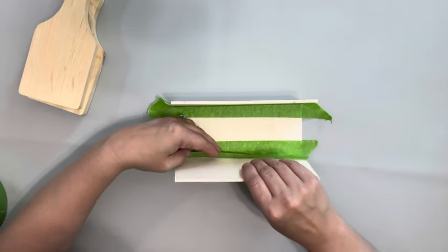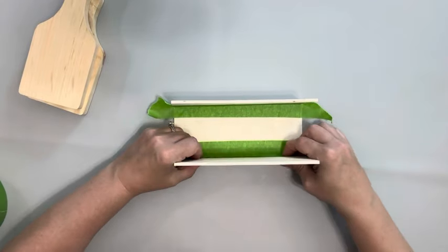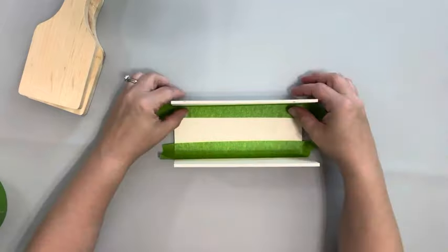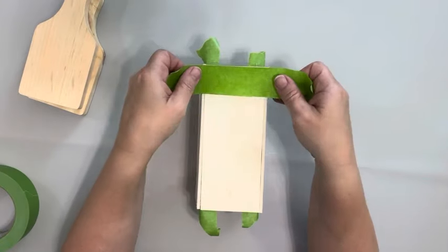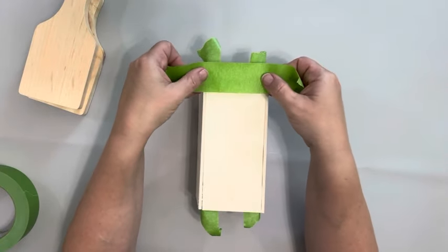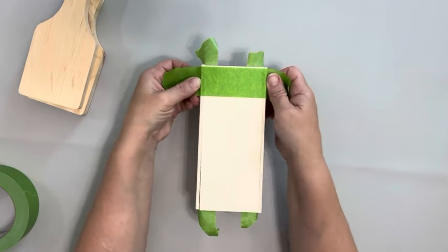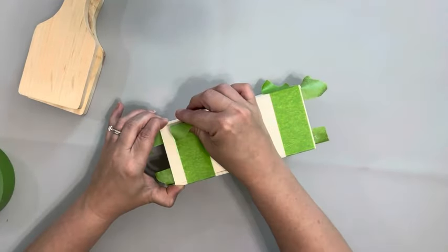To keep those in place while the glue sets, I use some painter's tape to hold them together, pieces on the inside and then again on the bottom on the outside to keep those pieces nice and tight until the glue sets.